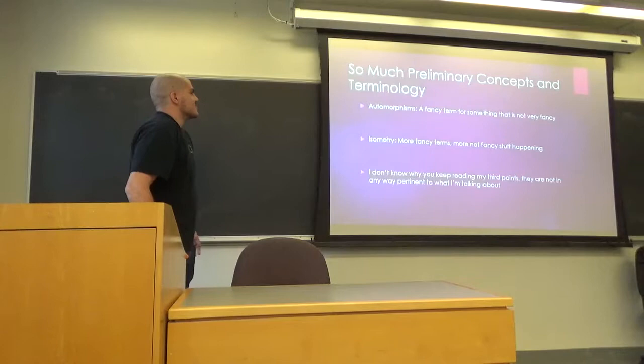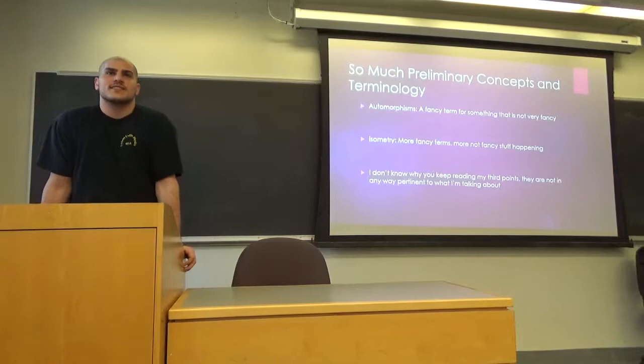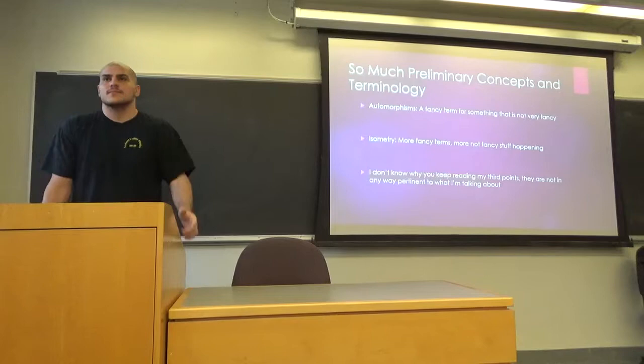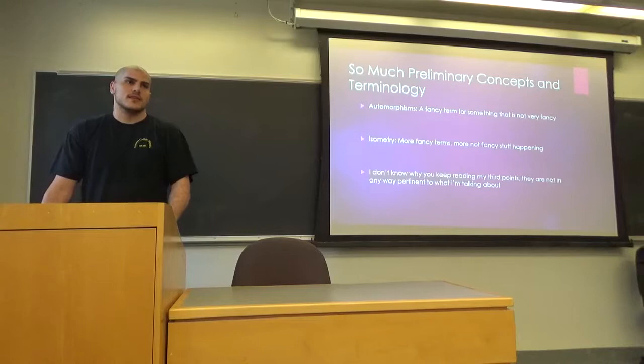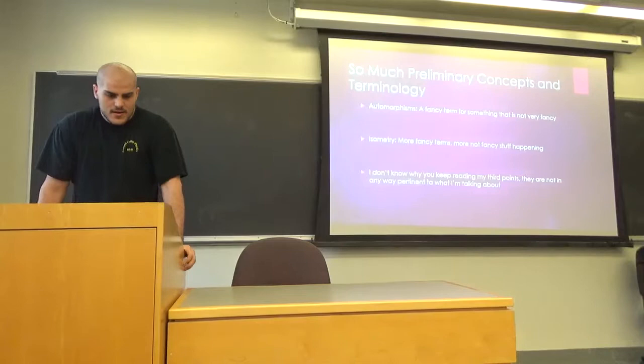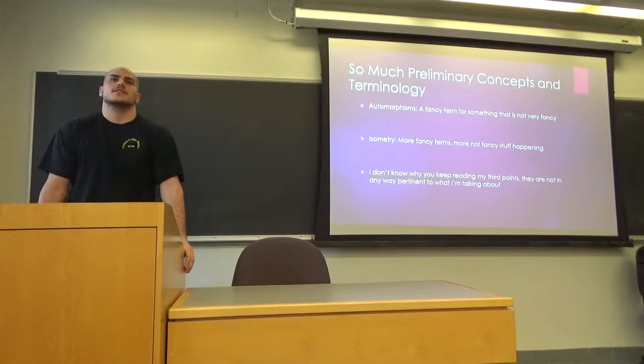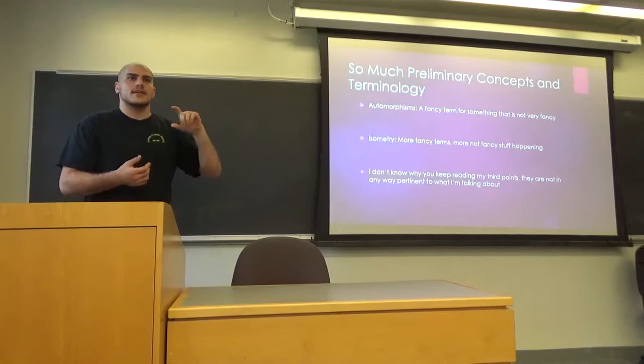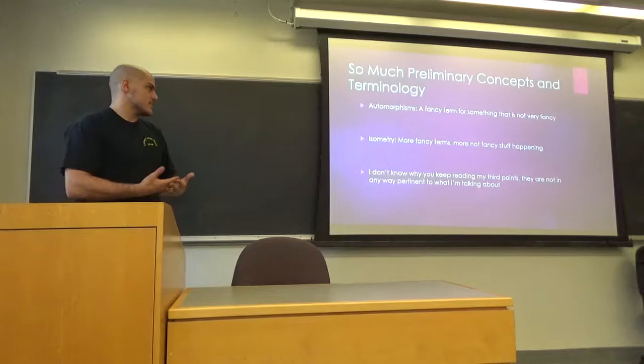An automorphism is a fancy term for something not very fancy — we're taking any element from our lattice and sending it to a different element, a different point. For example, the point (1, 0, 0) is sent to (0, 1, 0). The automorphism says every point is sent to exactly one other point and no two points are sent to the same point. An isometry is an automorphism that conserves the relation among points, meaning the inner product — the dot product — is preserved. So if (1,0,0) · (1,1,0) gives you one, after applying the isometry you still get one back.